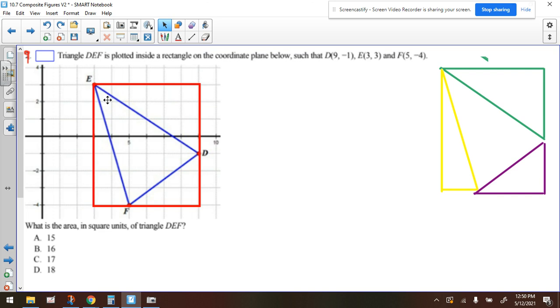What would we do to find the area of that red rectangle? We would use the formula area equals base times height. Let's count the base. The base is one, two, three, four, five, six units long.